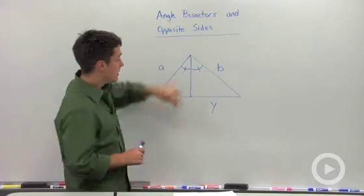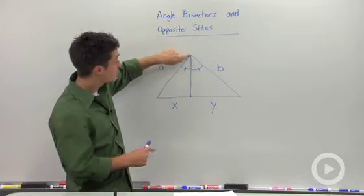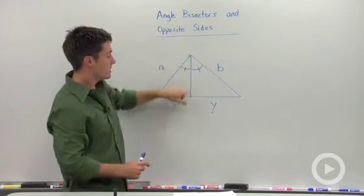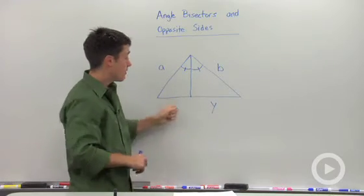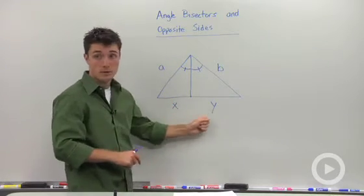If I look at this as my vertex and I'm bisecting it, the side that's opposite to it is going to be that opposite side, the one that contains X and Y here.